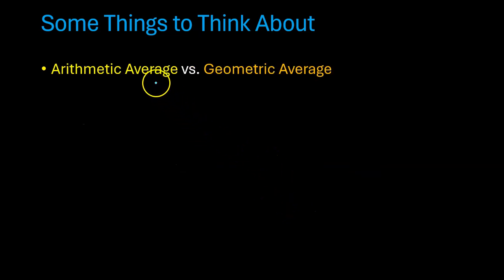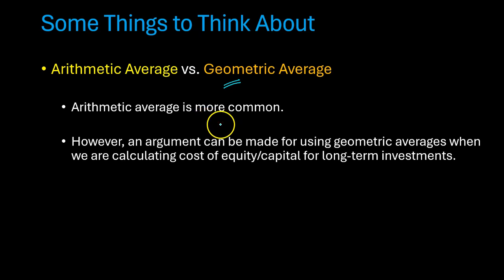Point number three, in the calculations that I showed you, I calculated the arithmetic average or the simple average of historical returns. But there are analysts who argue that sometimes calculating a geometric average might make more sense, especially in situations where we are evaluating relatively long-term investments. Now for the purposes of this video, I'm not calculating geometric averages nor going into a deeper discussion of why arithmetic versus geometric. The main point here is that even with the same data, you can see different estimates of a historical average and therefore a different estimate of the expected market risk premium.